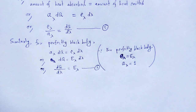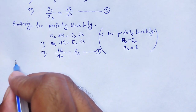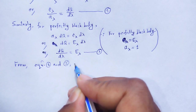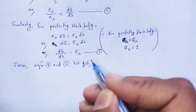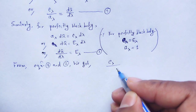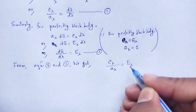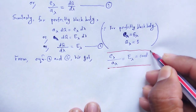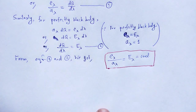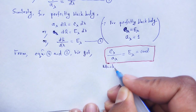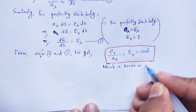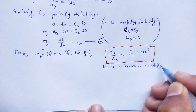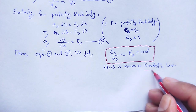From equations 1 and 2, we get E_lambda divided by A_lambda is equal to capital E_lambda, which is a constant. This proves Kirchhoff's law, which is therefore known as Kirchhoff's law of radiation — so Kirchhoff's law is proved.